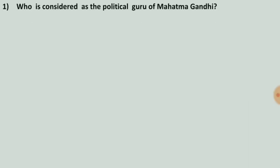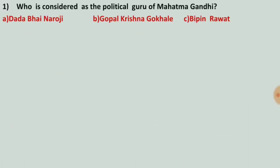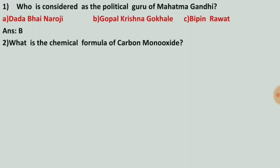Number one question: who is considered as the political guru of Mahatma Gandhi? Next question: what is the chemical formula of carbon monoxide? Options are C2, C2O, CO, and H2O. The correct answer is number C, which is CO.